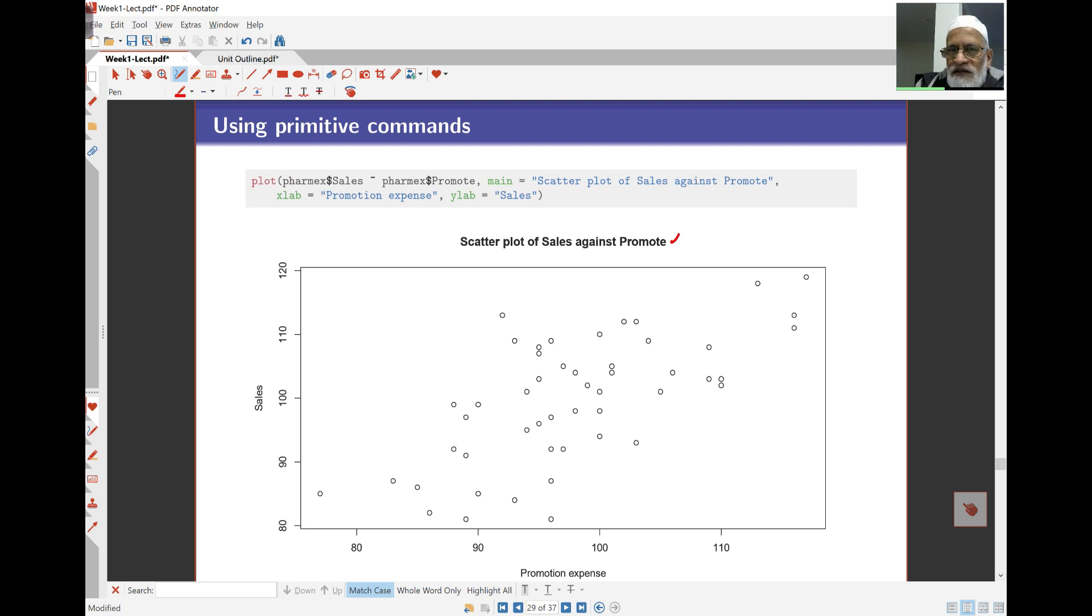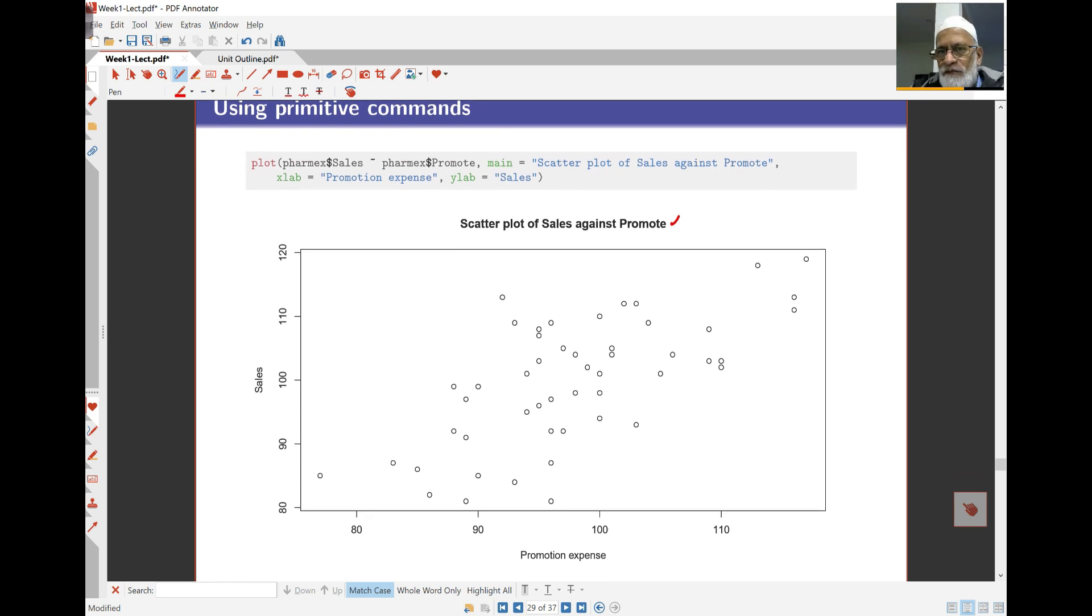And the x label is promotion expenses, the y label is sales. You'll learn more about how these things work as we go through this experience. There is my plot. You can see it's not bad, it's reasonable. Reasonable straight line here. You can be able to fit here with the data. There seems to be quite a bit of variation here in the data, and that's not unusual in these kinds of data here.